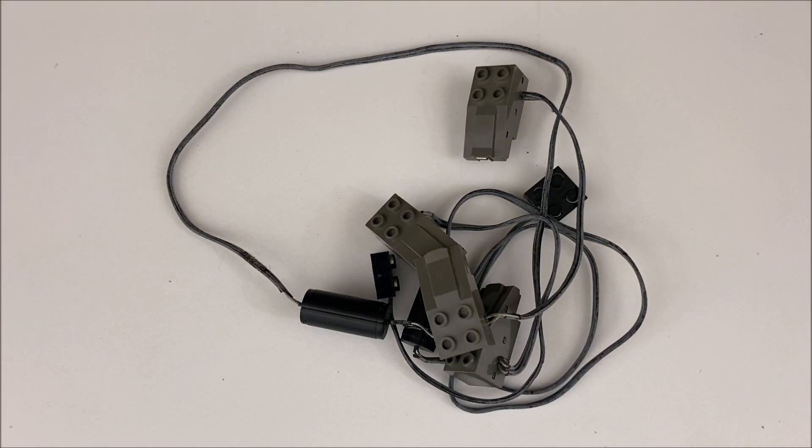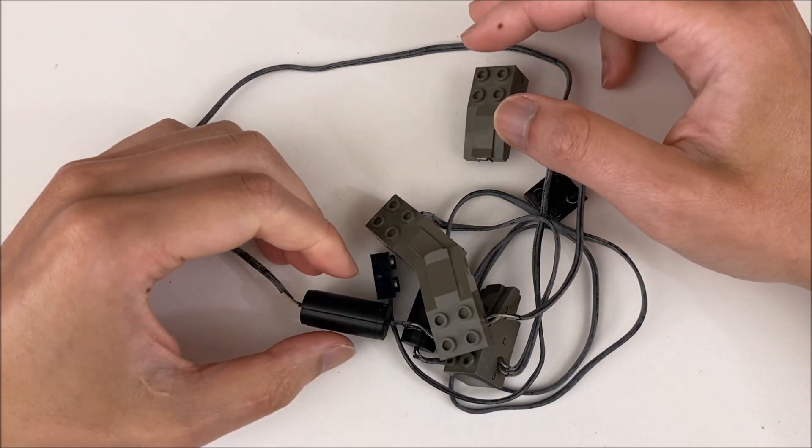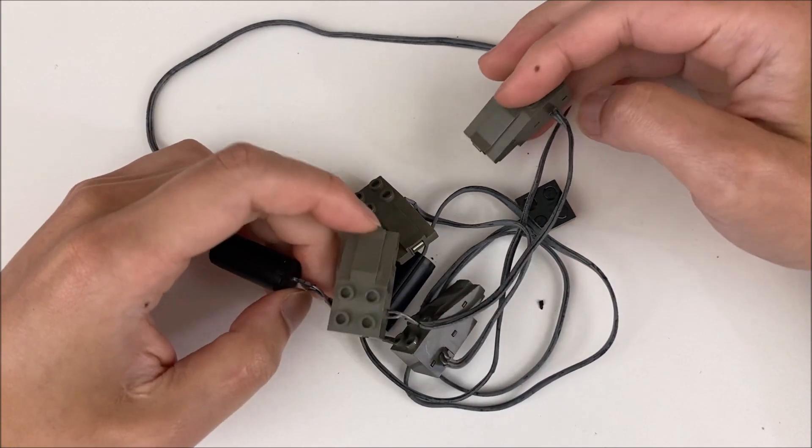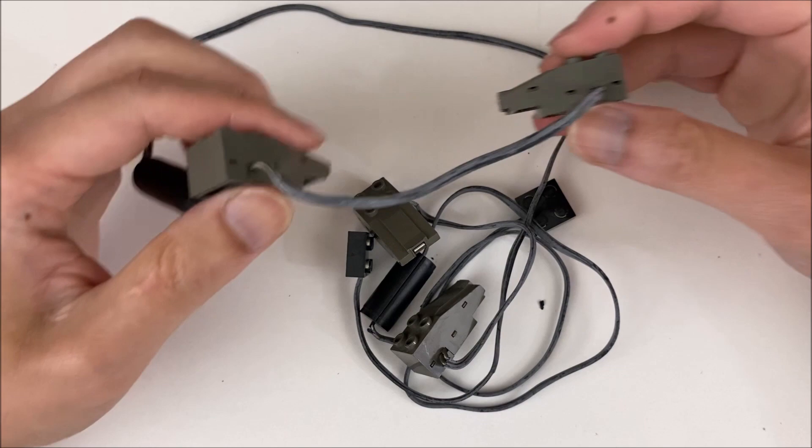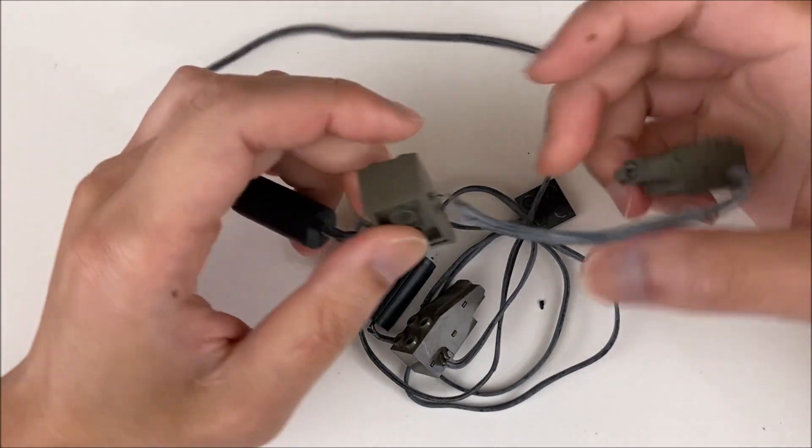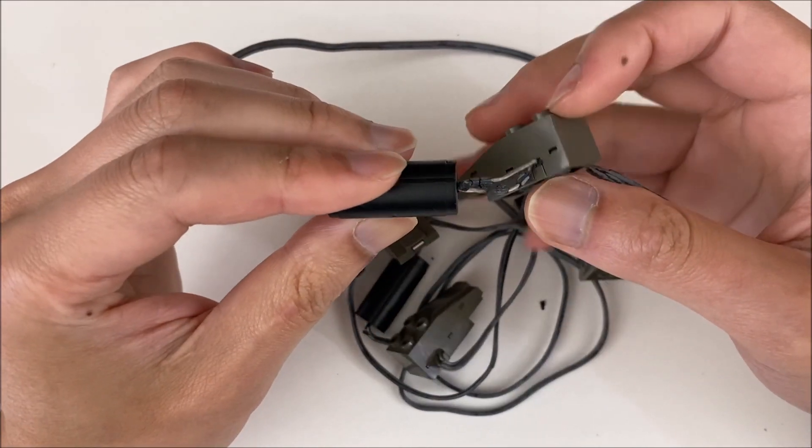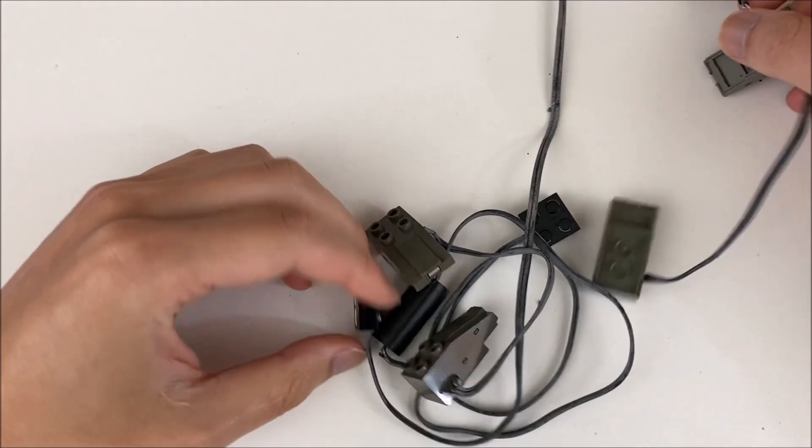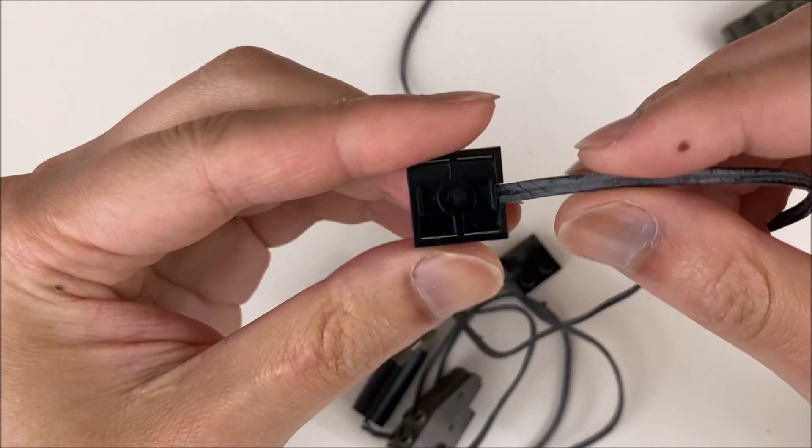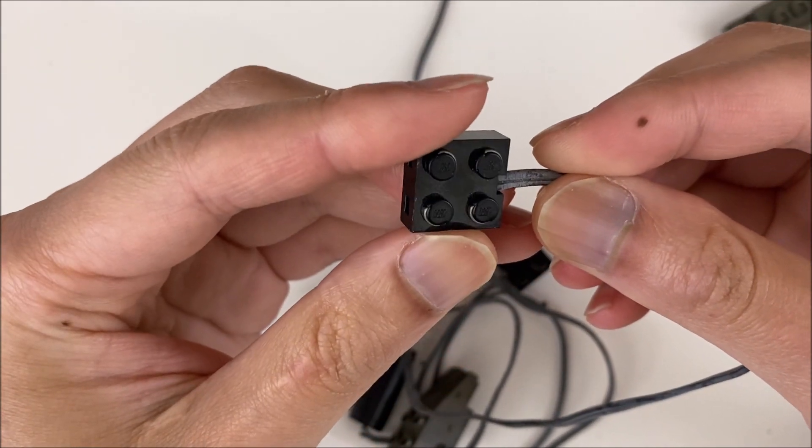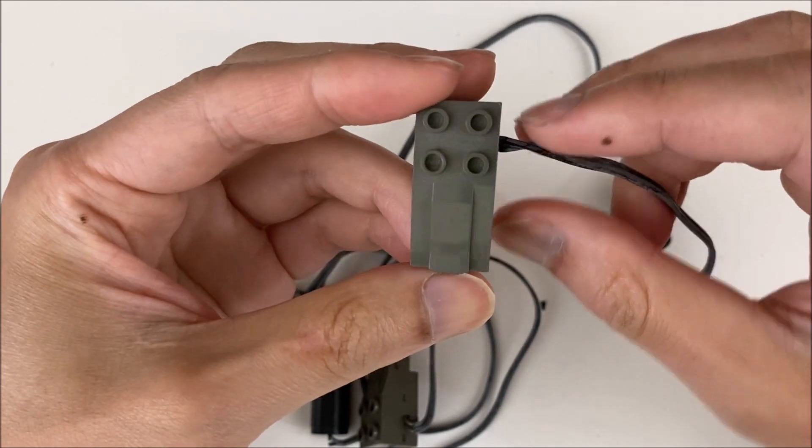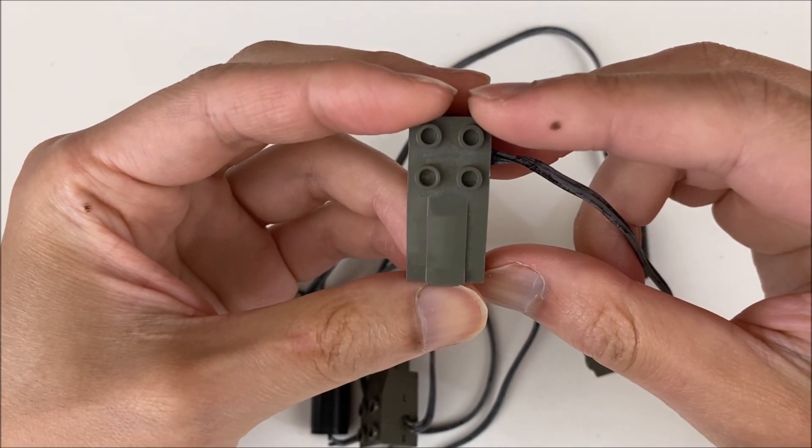So today we're finally going to do a follow-up video on 9-volt cable repair. We're going to fix one of these train connectors, which use the same crappy material. So these have a regular 9-volt connector on one end, but then the track connectors are different, so we're going to have to figure out how to take those apart.